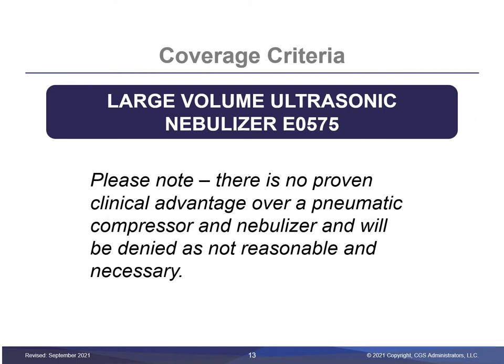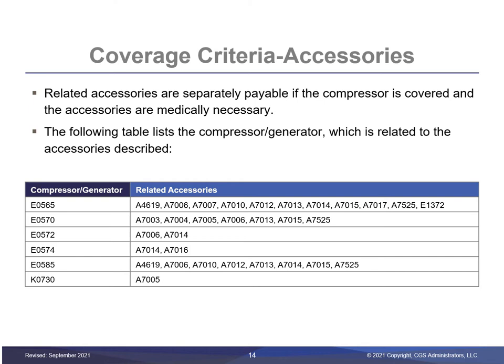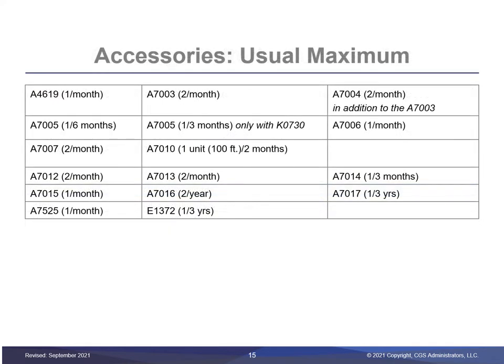A large-volume ultrasonic nebulizer offers no proven clinical advantage over a pneumatic compressor and will be denied as not reasonable and necessary in all cases. Accessories used with a nebulizer are separately payable. This table, also found in the LCD, shows the compressor or generator and the corresponding accessories that may be billed to Medicare. Each accessory has an established expected frequency need for replacement, and quantities provided above the maximum amount shown will be primarily denied but may be appealed with clinical documentation showing the medical necessity of the additional items.